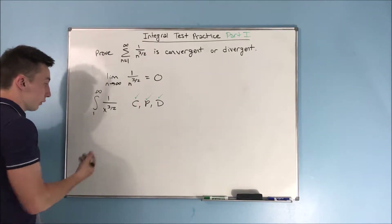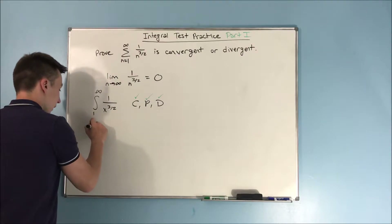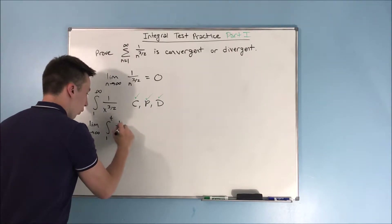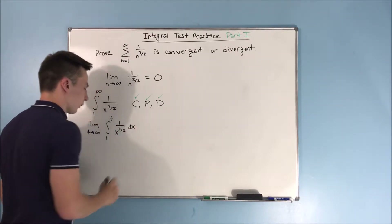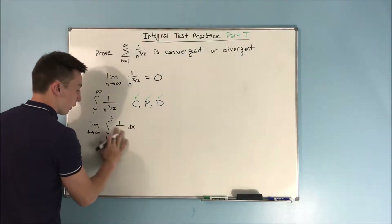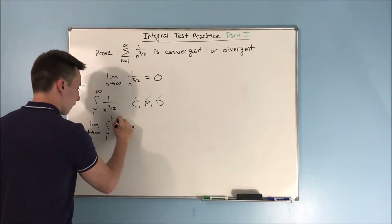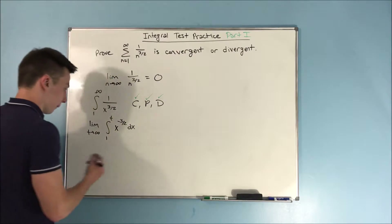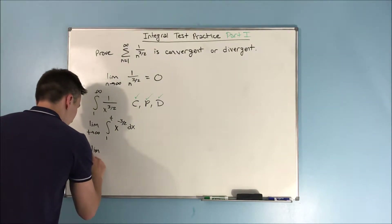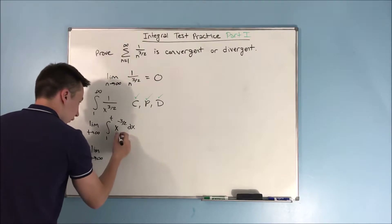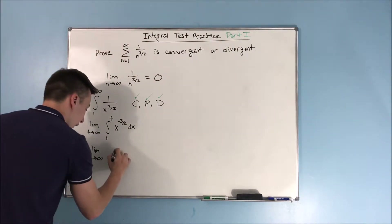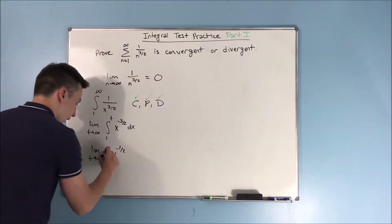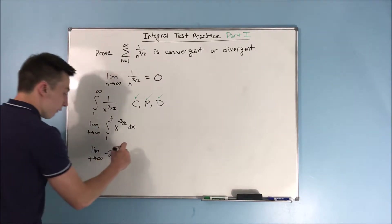Now we just solve this integral. We take the limit as t approaches infinity of the integral from one to t of one over x to the three halves dx. You can rewrite this as x to the negative three halves, which makes it easier to apply the reverse power rule. Adding one to the exponent gives x to the negative one half, and pulling that out front and flipping gives a factor of negative two. That is evaluated from one to t.